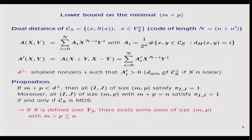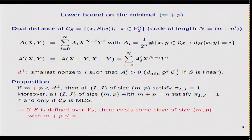If the code is a linear code, this new distance distribution is the distance distribution of the dual code — the orthogonal code. If the code is non-linear, it doesn't have any dual, but this new distance distribution has significance from a combinatorial point of view. In particular, its dual distance — the smallest integer i such that A'_i is non-zero — has significance in all cases. We have proved that the minimum number of bits needed to get a sieve must be at least the dual distance of the code defined by S.